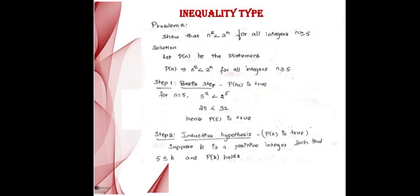Now we will see another problem of the inequality type. The given statement is: n² is strictly less than 2ⁿ, for all integers n ≥ 5. Here n takes the minimum initial value of 5. So I take the statement P(n) as n² < 2ⁿ for all integers n ≥ 5, and in the basis step I prove it for n = 5 since the initial condition is 5. In Step 2, I assume the statement is true for all positive integers k ≥ 5, so P(k) holds.